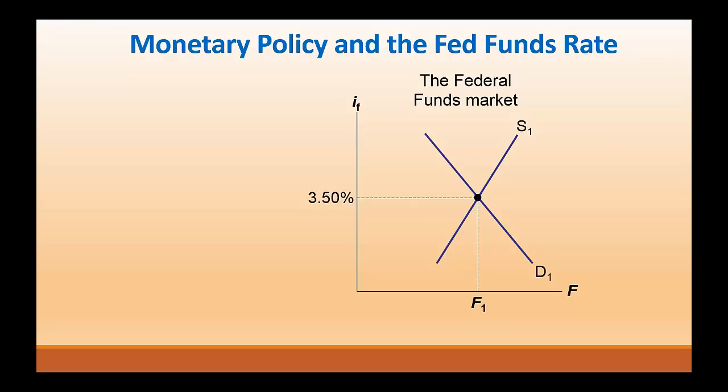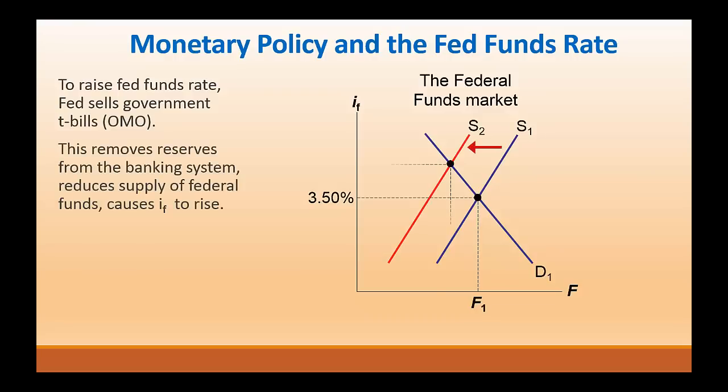These tend to be really short loans, as short as borrowing money overnight. F-1 represents the quantity of federal funds — the excess reserves that banks are lending and borrowing from each other. To raise the federal funds rate, the Fed will sell government T-bills, conducting what we know as open market operations, referred to as open market sales. These sales remove reserves from the banking system, reducing the supply of federal funds and causing the federal funds rate to increase.